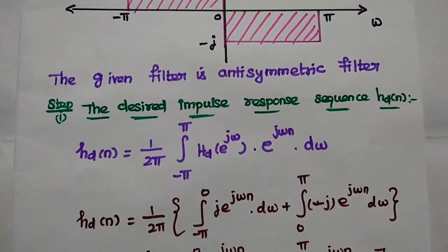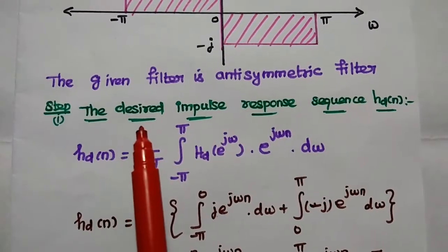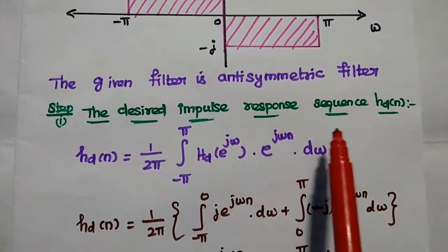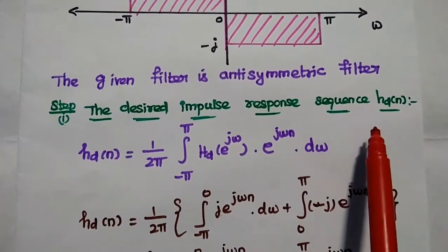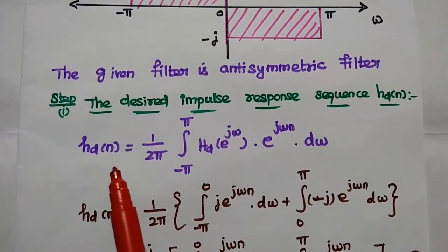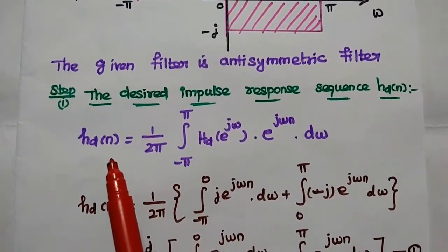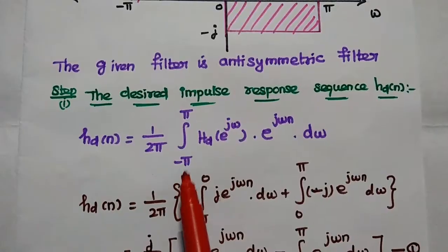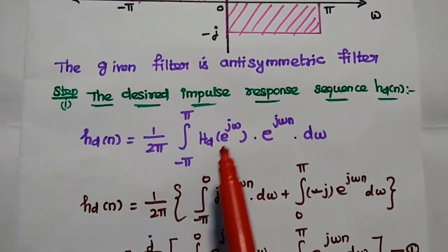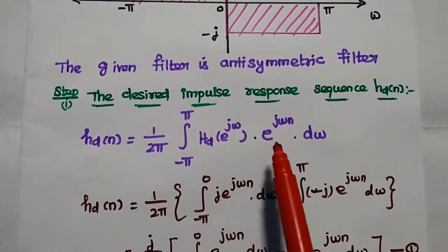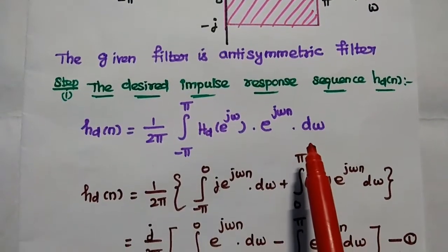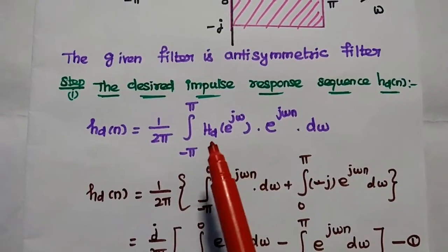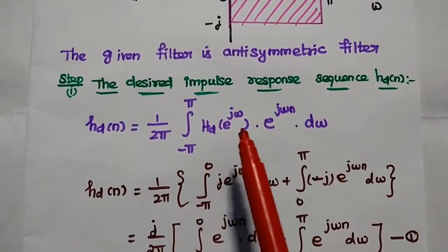The first step in the design process is to obtain the desired impulse response sequence hd(n). It can be obtained using the formula: hd(n) equals 1 over 2π times the integral from minus pi to plus pi of hd(e^(jω)) times e^(jωn) dω. Next, we are going to substitute the value of hd(e^(jω)).